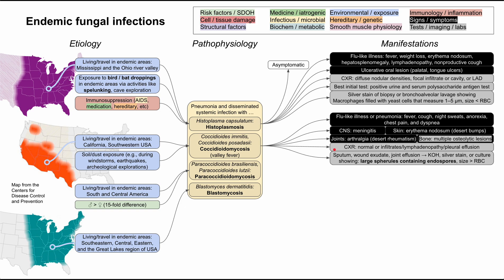For coccidiomycosis diagnosis, you obtain a sample from sputum, wound exudate, or joint effusion, then do a KOH, silver, or culture stain. You'll see large spherules containing endospores. The Coccidioides fungus will be larger than red blood cells — this is how you differentiate it from histoplasma, which is smaller than red blood cells.